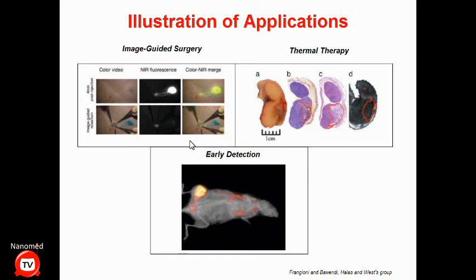For imaging, an MRI or PET contrast agent carried by nanoparticles localizes in the tumor, enabling early detection because a brighter signal detects fewer cells. One example by Frangioni and Bawendi uses quantum dots for sentinel lymph node resection — quantum dots injected into a pig localize in the lymph nodes, allowing the surgeon to visualize where the metastatic tumor is and cut precisely using light as a guide.